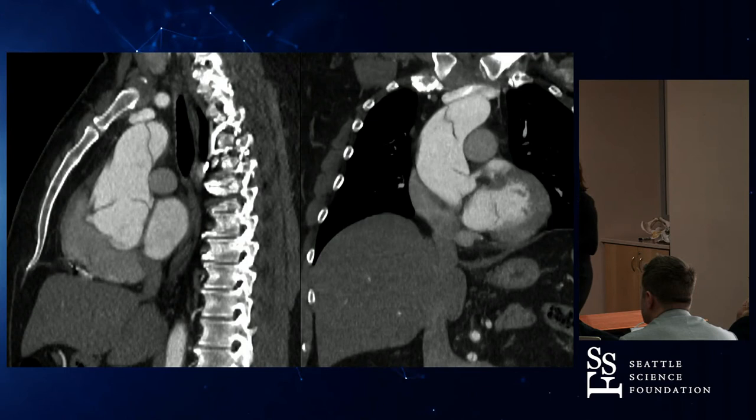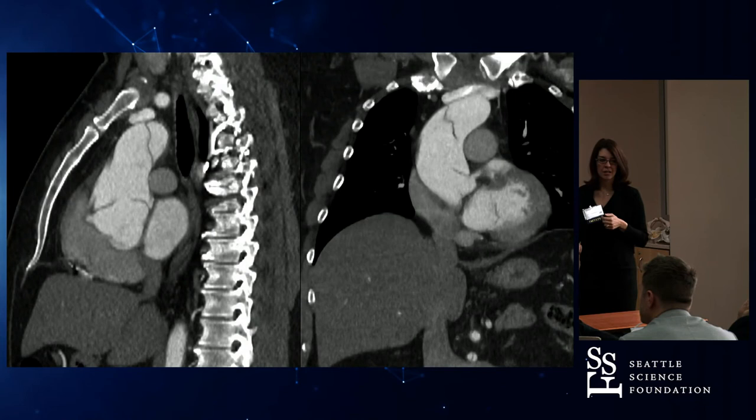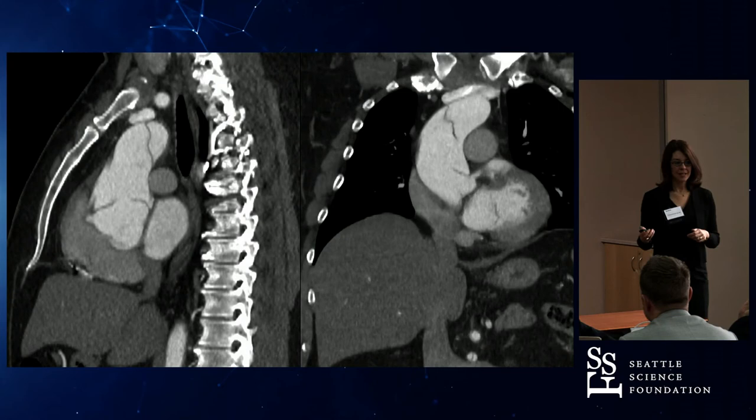I'm like, oh my gosh — is he going to be able to make it? This is the dissection right above the right main coronary artery. And here's the dissection right above the left main. If those extend like they did in the neck, it's not good.